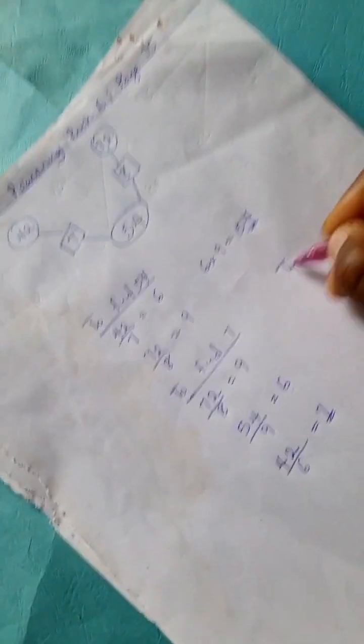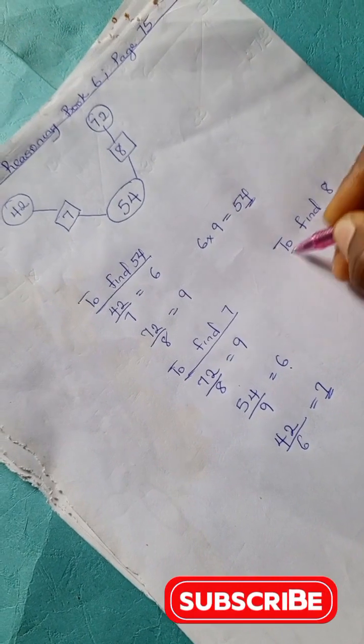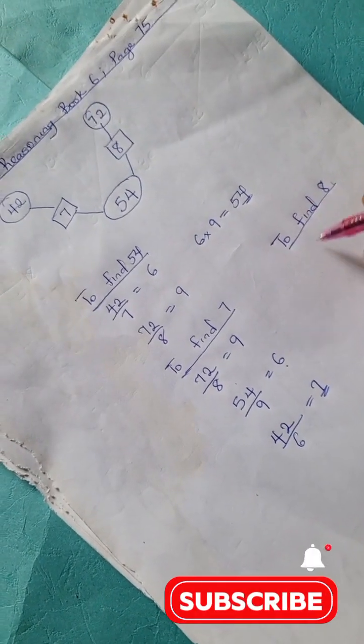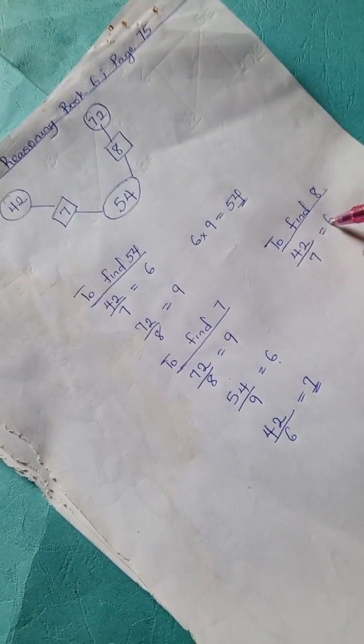To find 8, we're going to have 42 divided by 7 is 6.